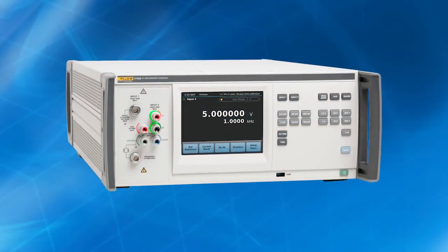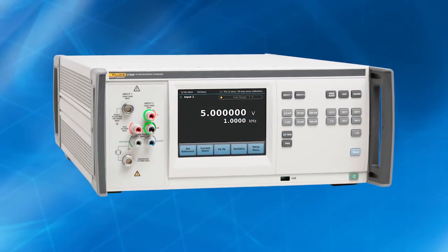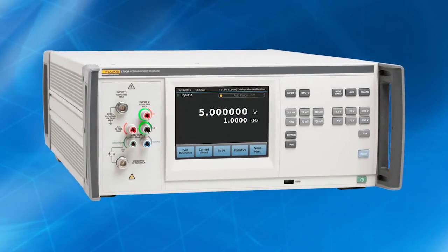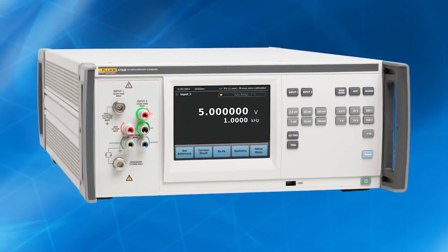The 5790B AC measurement standard simplifies AC voltage and current measurements and lets you save time with automated calculations.